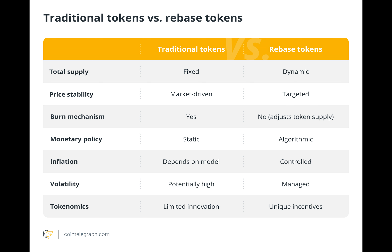Rebase tokens function according to a unique mechanism in which the token's total supply is periodically adjusted to preserve price stability or to aim for a particular value. Let's use Ampleforth to illustrate how rebase tokens work. Rebasing is a technique used by rebase tokens like AMPL to maintain a target price such as one dollar. The protocol automatically modifies the token supply to bring AMPL's market price back to one dollar whenever it deviates from its goal.